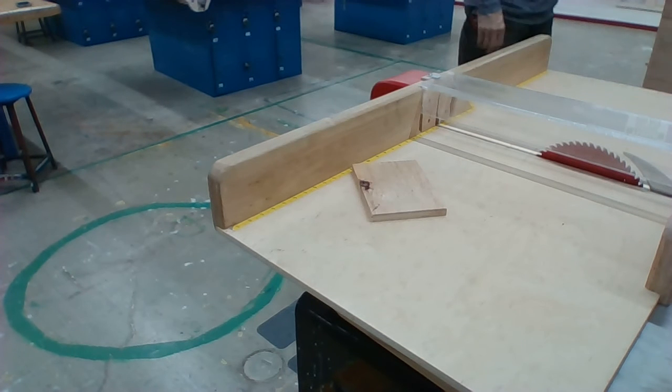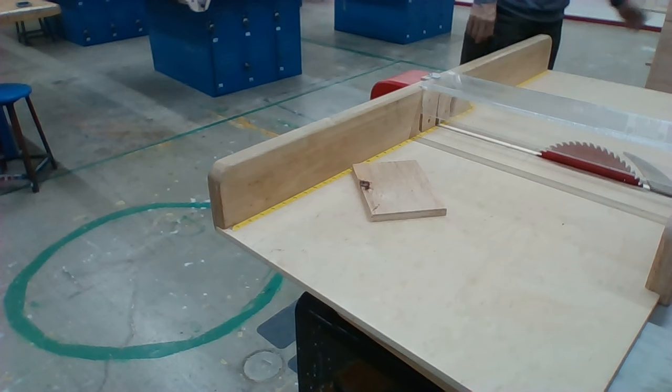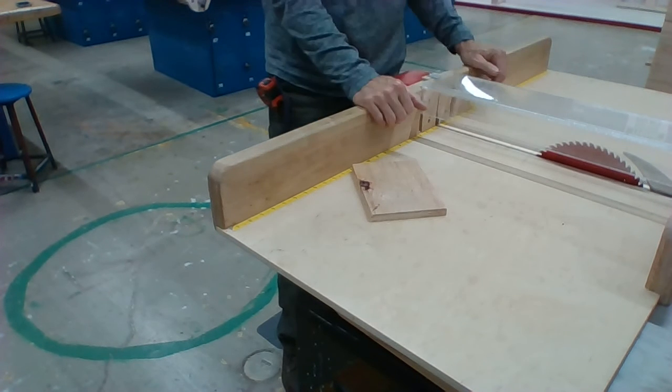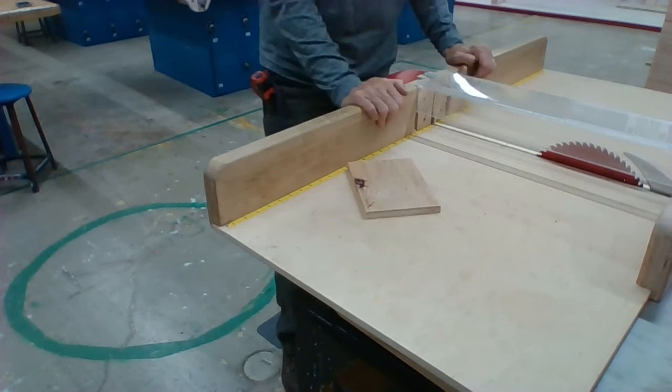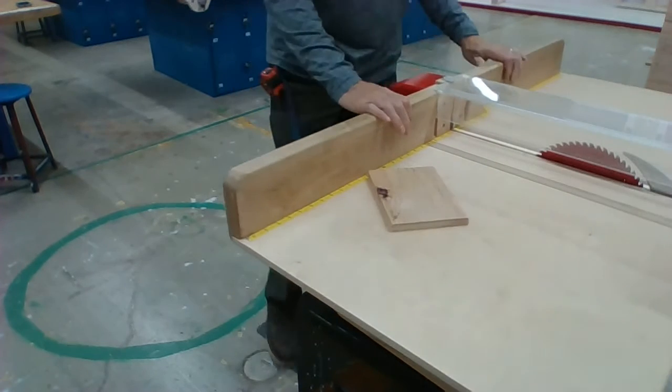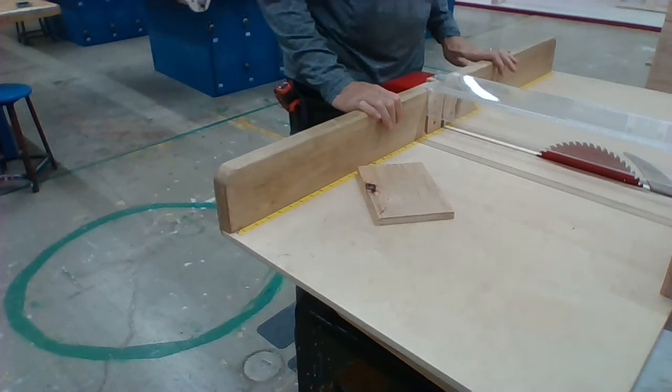Keeping with the table saw, you just want to make sure that you're not putting your fingers underneath the guard here as the blade's turning and that this sled can come all the way off. But if you keep it here on the table, you should be fine.